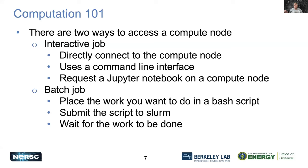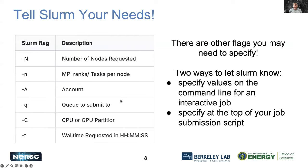There are two ways to access a compute node. With an interactive job, you can directly connect to a compute node via a command line interface or request a Jupyter notebook on a compute node. With a batch job submission, you submit a script, give a time and priority, and it can execute as quickly as possible or take a couple of days depending on resources needed. The resources you allocate will have a large effect on the priority your job receives.